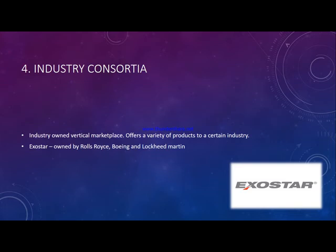In contrast, a horizontal marketplace means a single type of product is offered to multiple industries. For example, steel is a single product that can be used in construction, automobile, space, or any other industry. So a vertical marketplace offers a variety of products to one industry, while a horizontal marketplace offers a single product to multiple industries. An industry consortia will always be a vertical marketplace and will always be industry-owned — not independent.